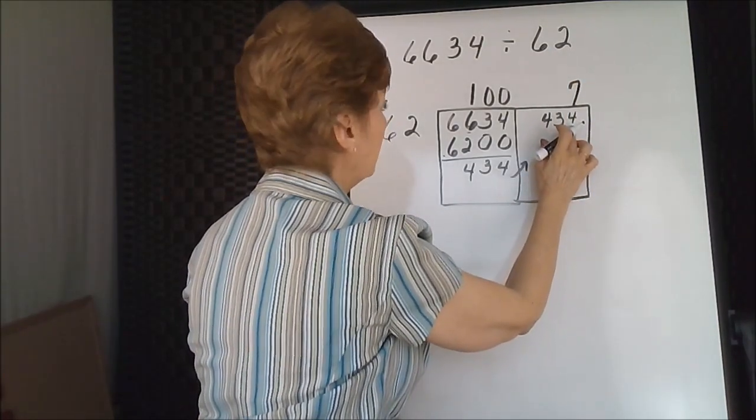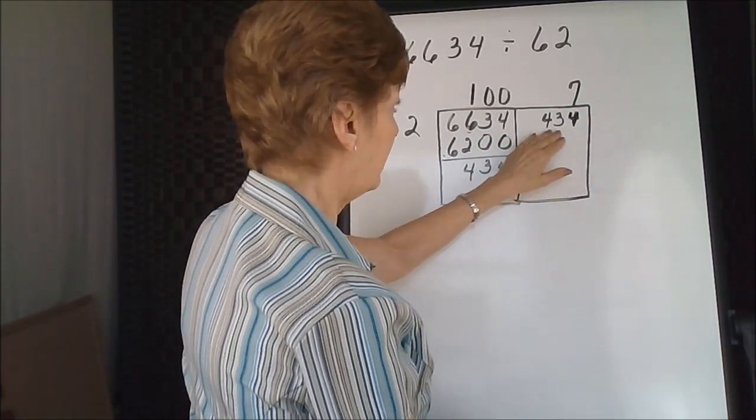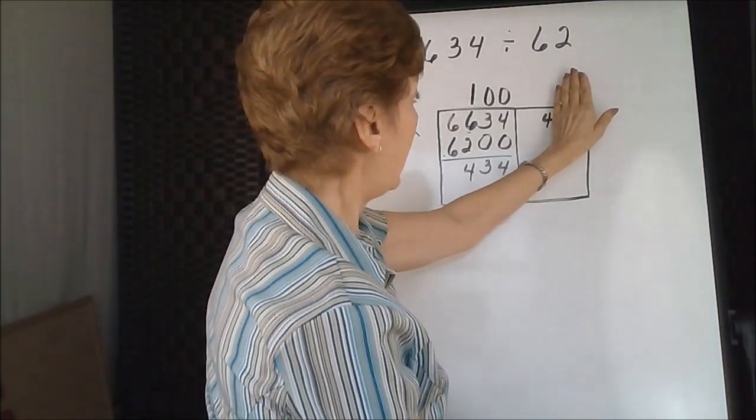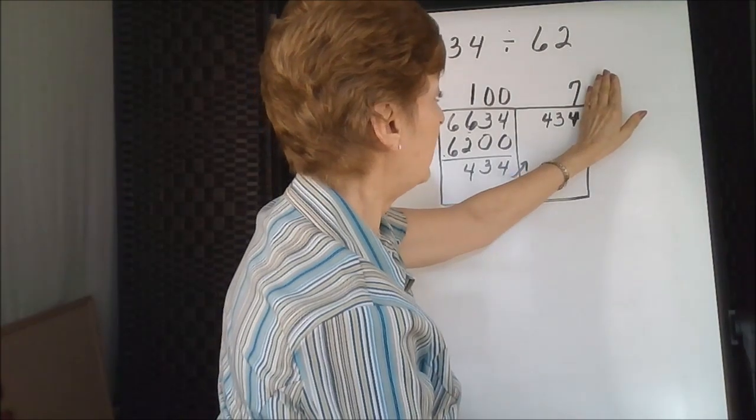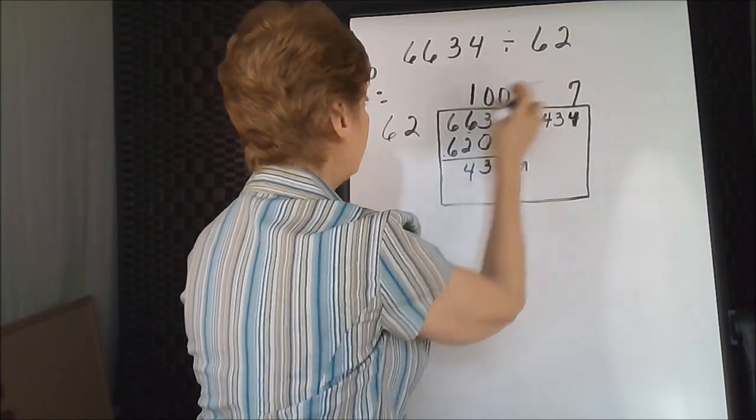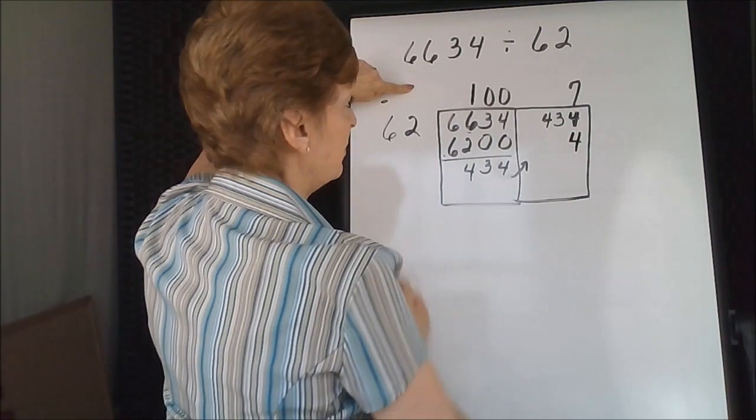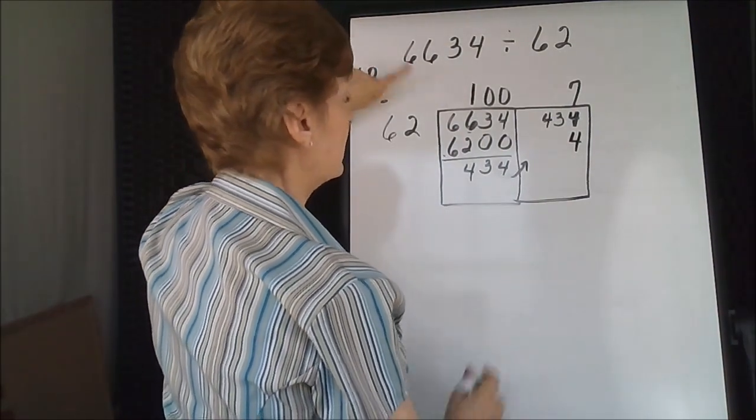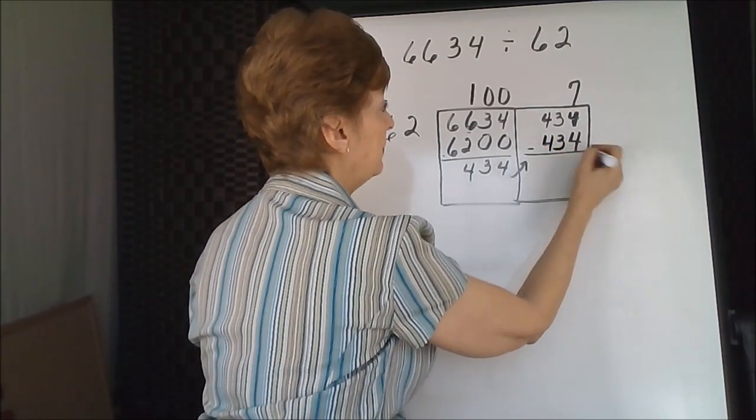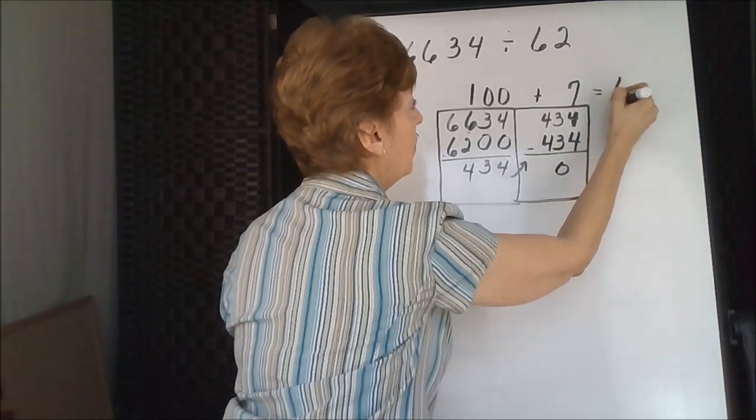And that would have to go over the last number because the larger of the numbers was the whole thing. 62 would not go into 4, would not go into 43. It will go into the 434. So our 7 goes above here. 7 times 2 is 14. Carry 1. And 7 times 6 is 42. And one more is 43. Oh my gosh, it turned out perfectly. So our answer is 107.